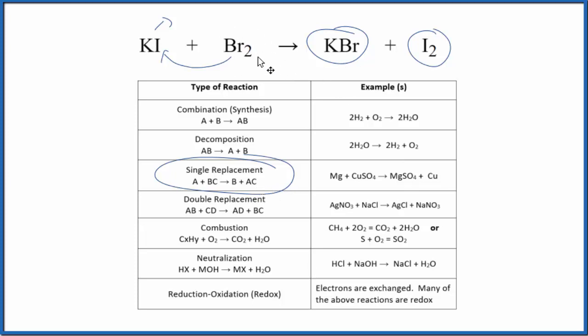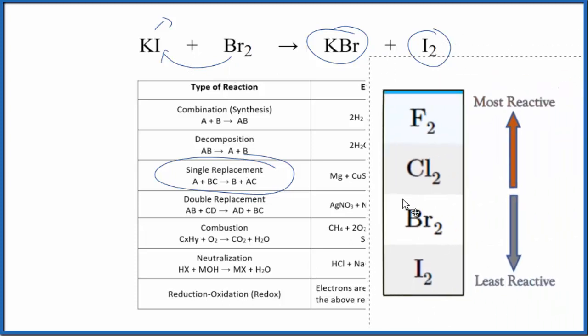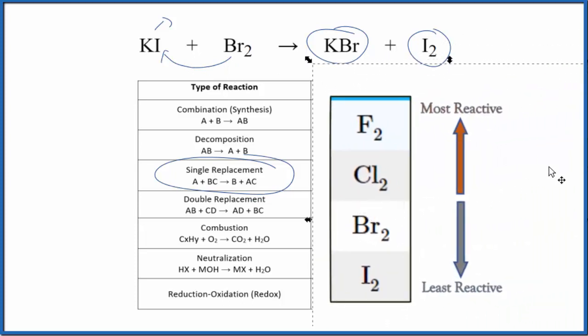We do need to check to see if the bromine is reactive enough to push the iodine out. And we can use this activity series of the halogens here, group 17, sometimes called 7A.